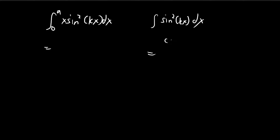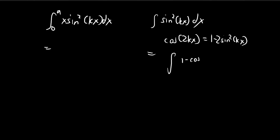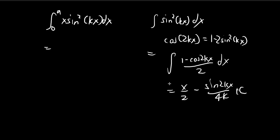As always, if you are trying to solve for a sine squared integral, we just use the double-angle formula. So this integral becomes ∫(1 − cos(2kx))/2 dx, which equals x/2 − sin(2kx)/(4k) + C. Going back, we have an x, and we integrate this to get x/2 − sin(2kx)/(4k).